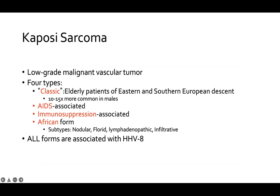Kaposi sarcoma is a malignant vascular tumor — lower grade than angiosarcoma but still malignant. It can begin in one area and metastasize throughout the body. There are four types: classic, occurring in elderly patients of Eastern and Southern European/Mediterranean descent and 10 to 15 times more common in males; AIDS-associated Kaposi sarcoma; immunosuppression-associated Kaposi sarcoma; and additional variants.